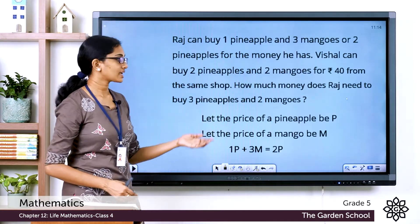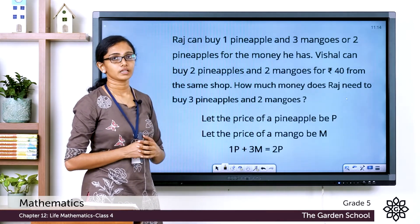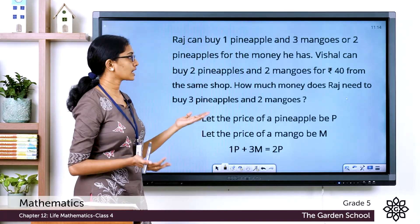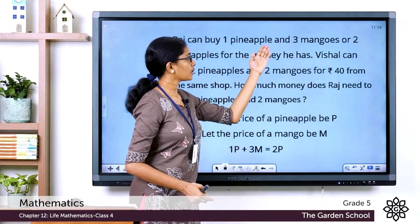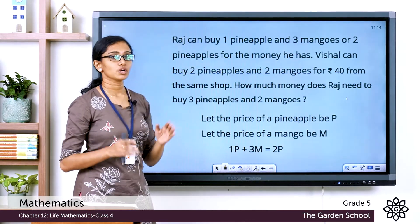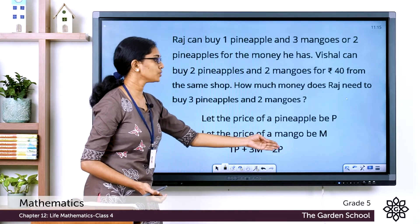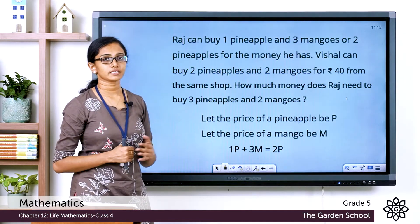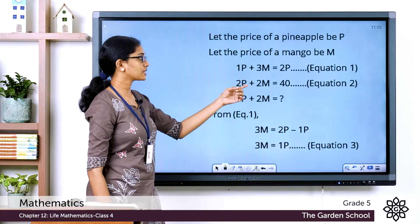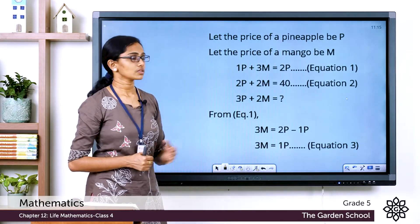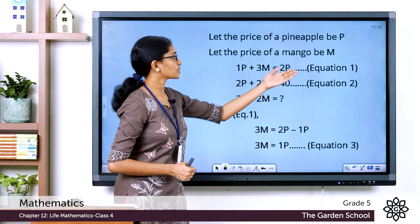Let's suppose the price of a pineapple is P and the price of a mango is M. From the first sentence: one pineapple plus three mangoes equals two pineapples in price — call this equation 1. Vishal buys two pineapples and two mangoes for rupees 40, giving us equation 2. For ease of calculation, these are named equation 1 and equation 2.